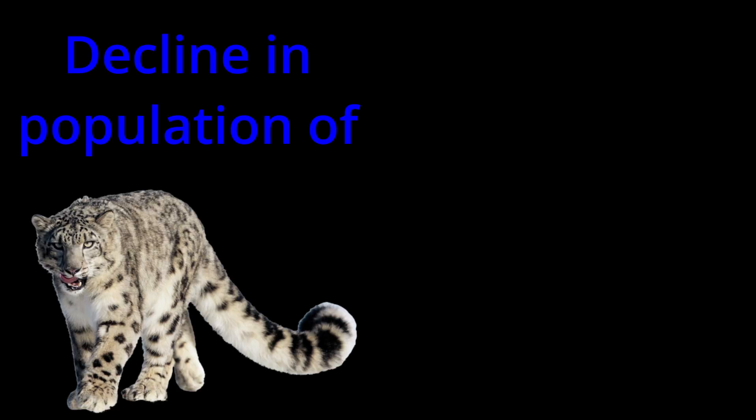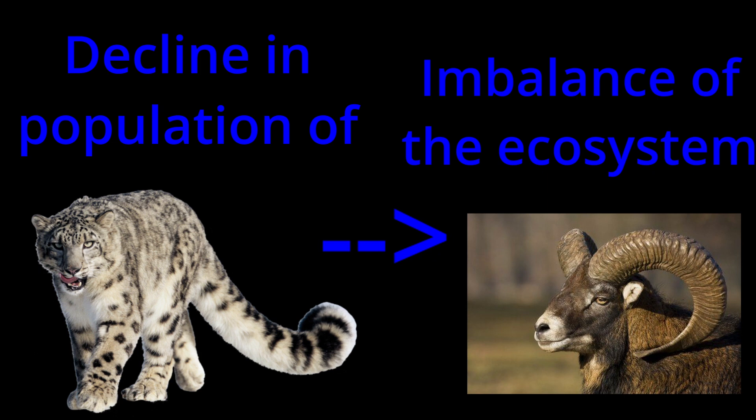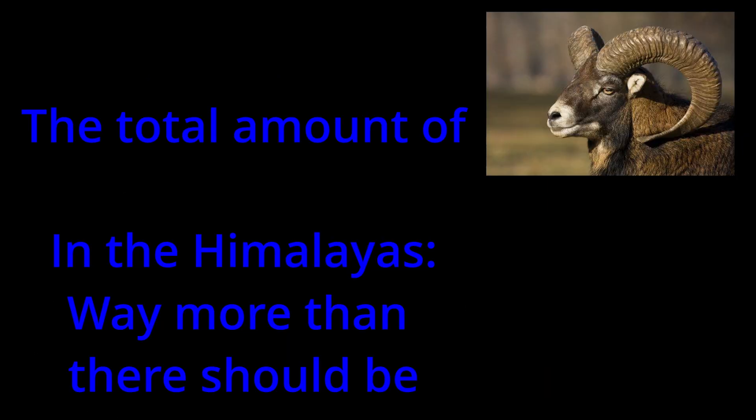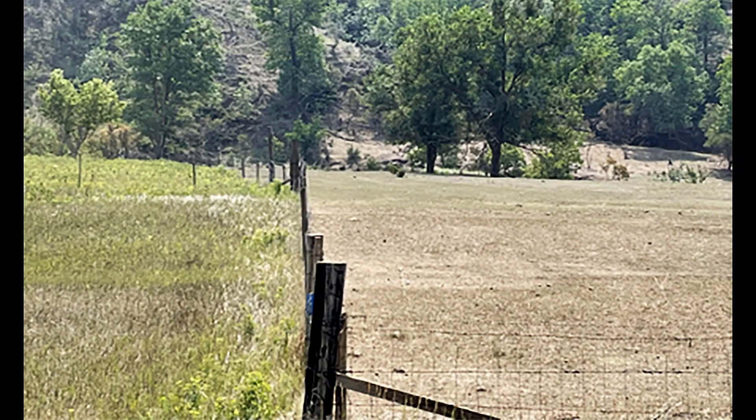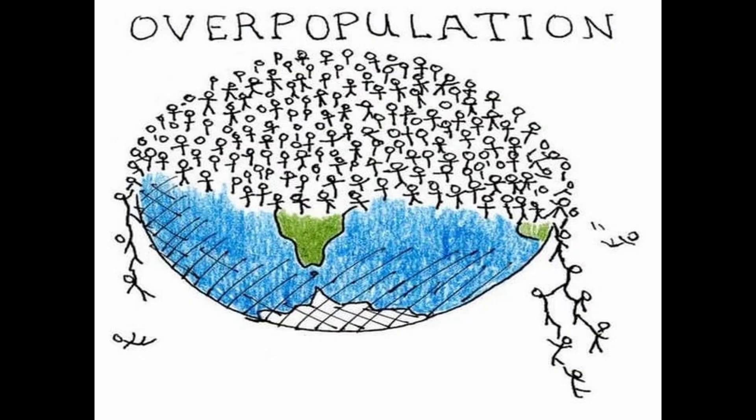Speaking of the ecosystem, it doesn't stop with the decline of snow leopards. With the endangerment of snow leopards comes an imbalance in the ecosystem in which they reside. Their prey would increase and keep on increasing, leading to problems such as overgrazing and overpopulation.